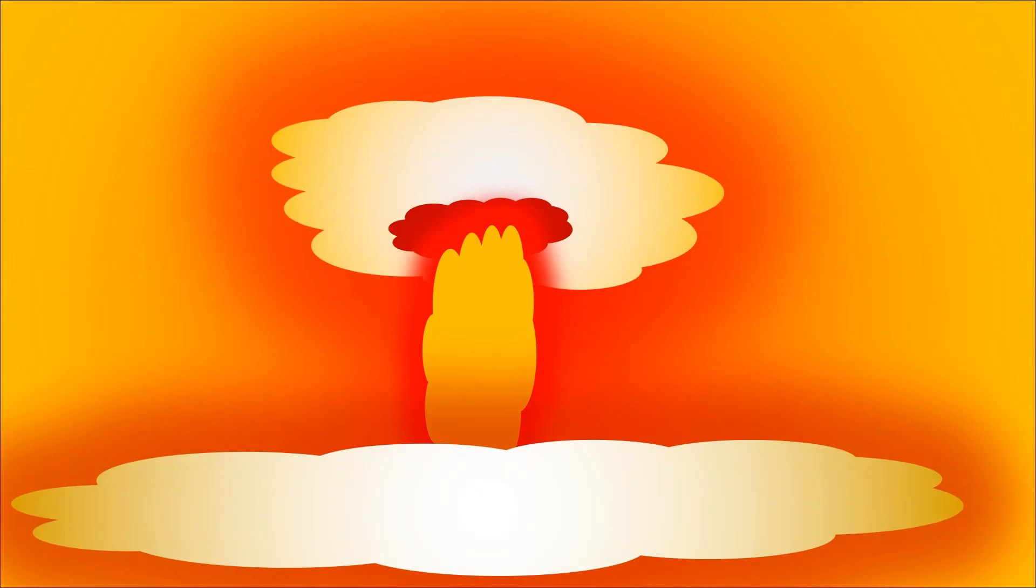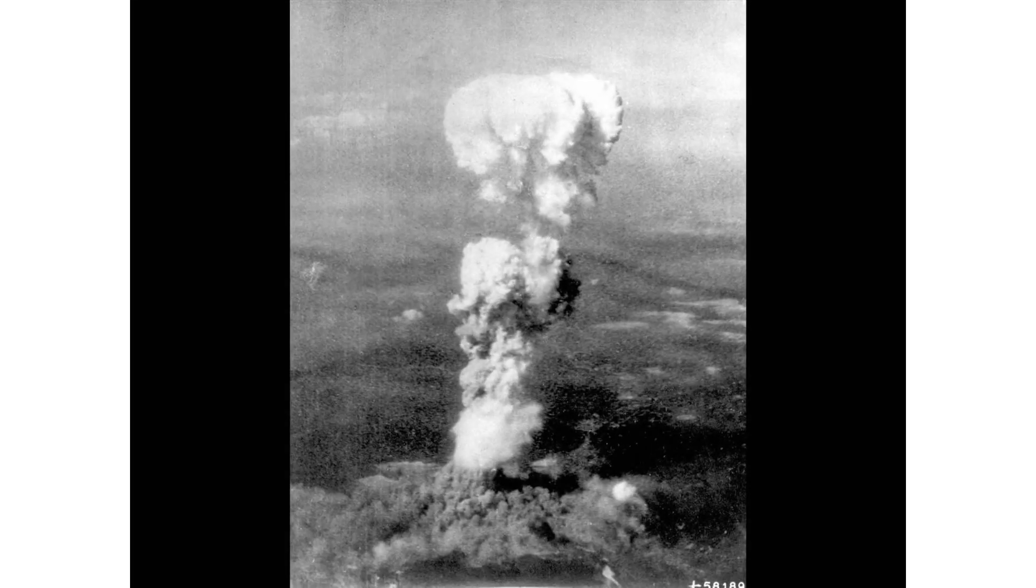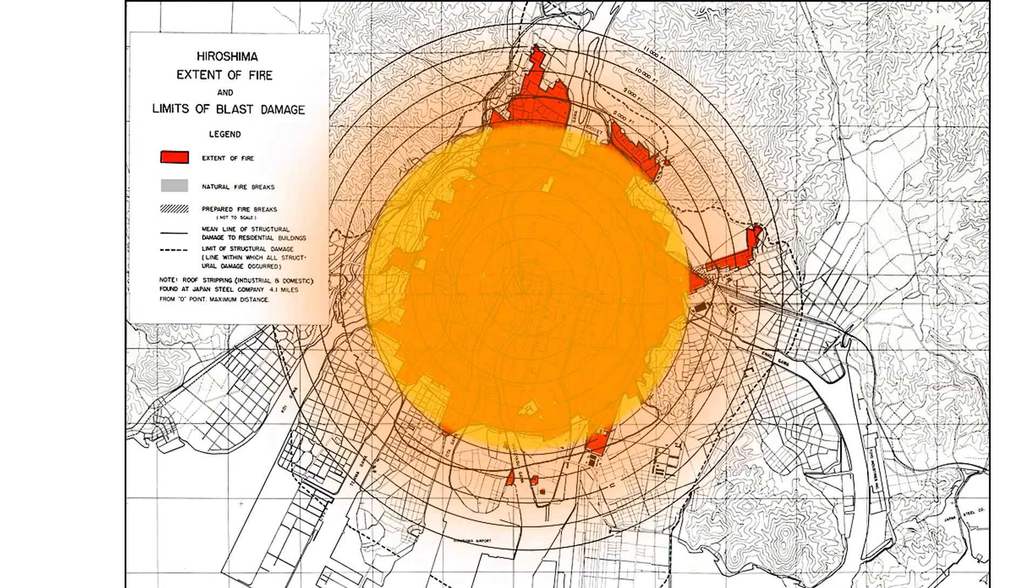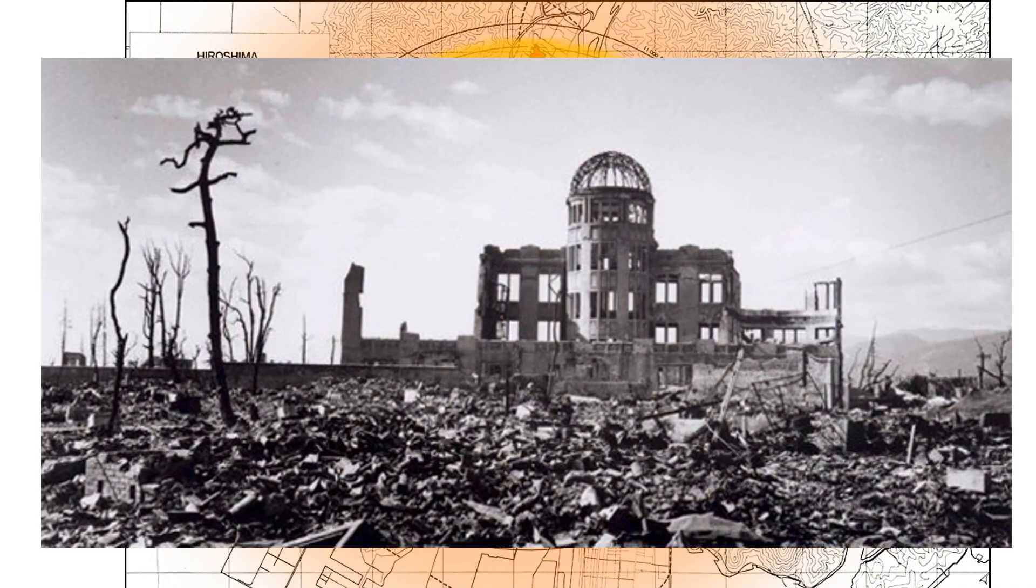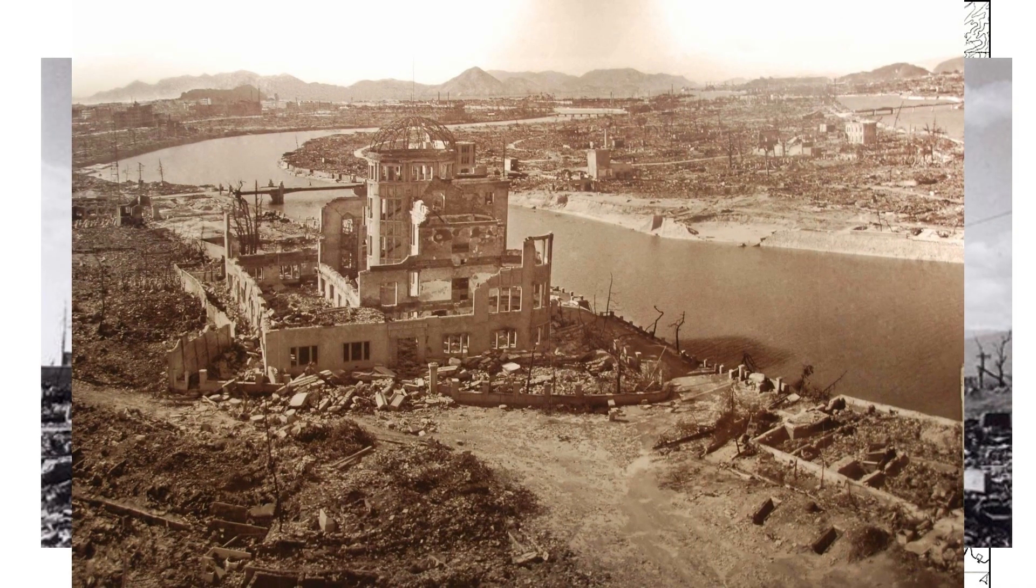The explosion's yield is estimated at around 15 kilotons of TNT. The Hiroshima firestorm extended roughly 3.2 kilometers. Almost everything within 1.6 kilometers of the point directly beneath the explosion was completely destroyed.